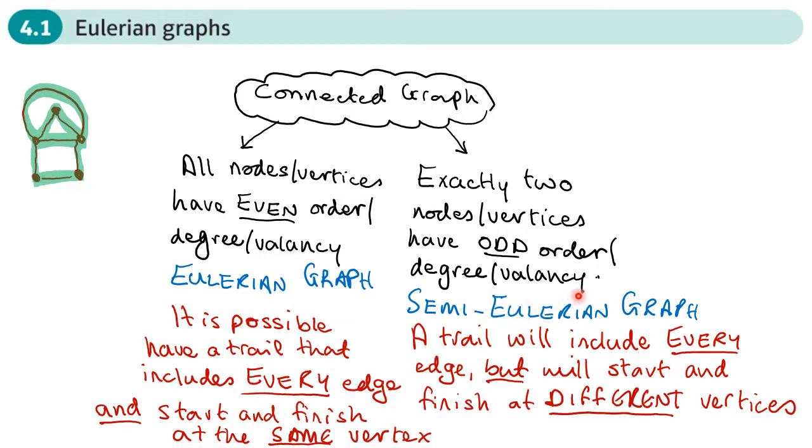With a semi-Eulerian graph, a trail will include every edge, but will start and finish at different vertices. So here's an example here, and you'll see that the path that I draw, the trail that I draw will visit every edge, but start and finish at different vertices.